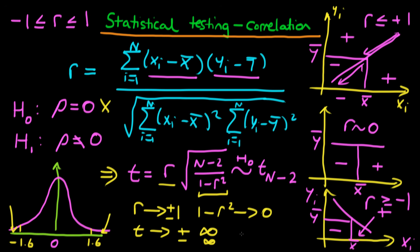Finally, if we think about the circumstance where r is equal to 0, then t is just going to be 0 because we're multiplying everything in this expression by r. So we find ourselves right in the middle of the sampling distribution for the sample correlation, which means we're not going to reject the null hypothesis, and we cannot conclude that there is significant correlation between x and y.